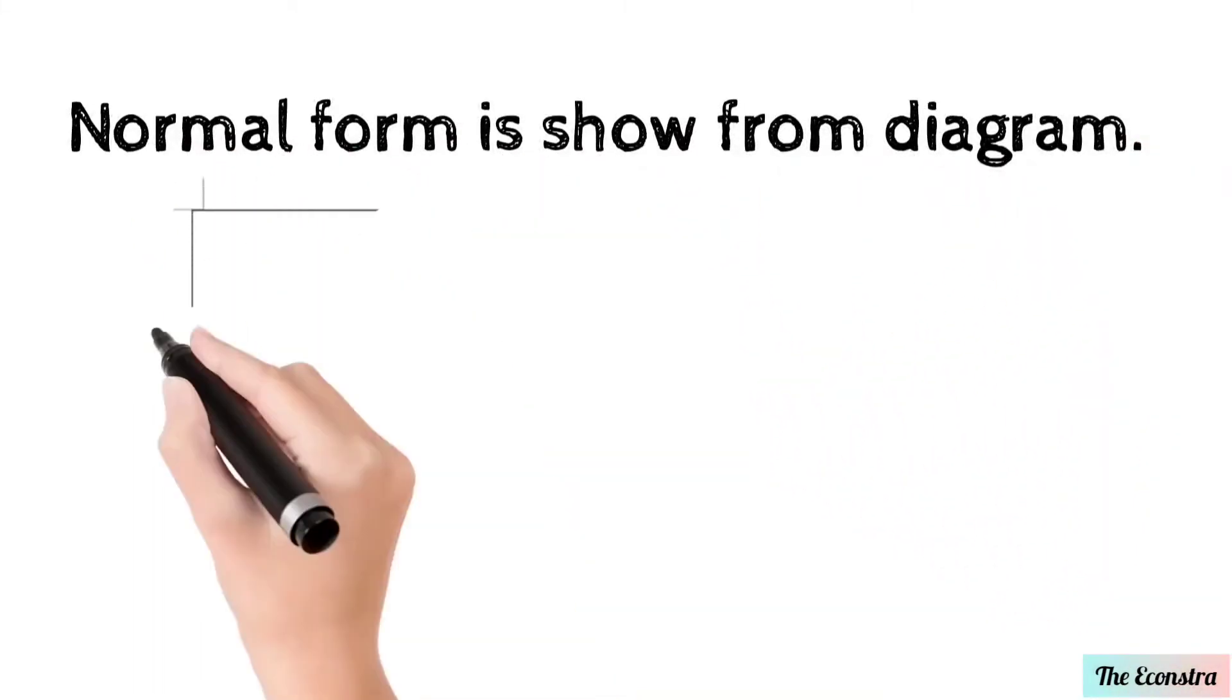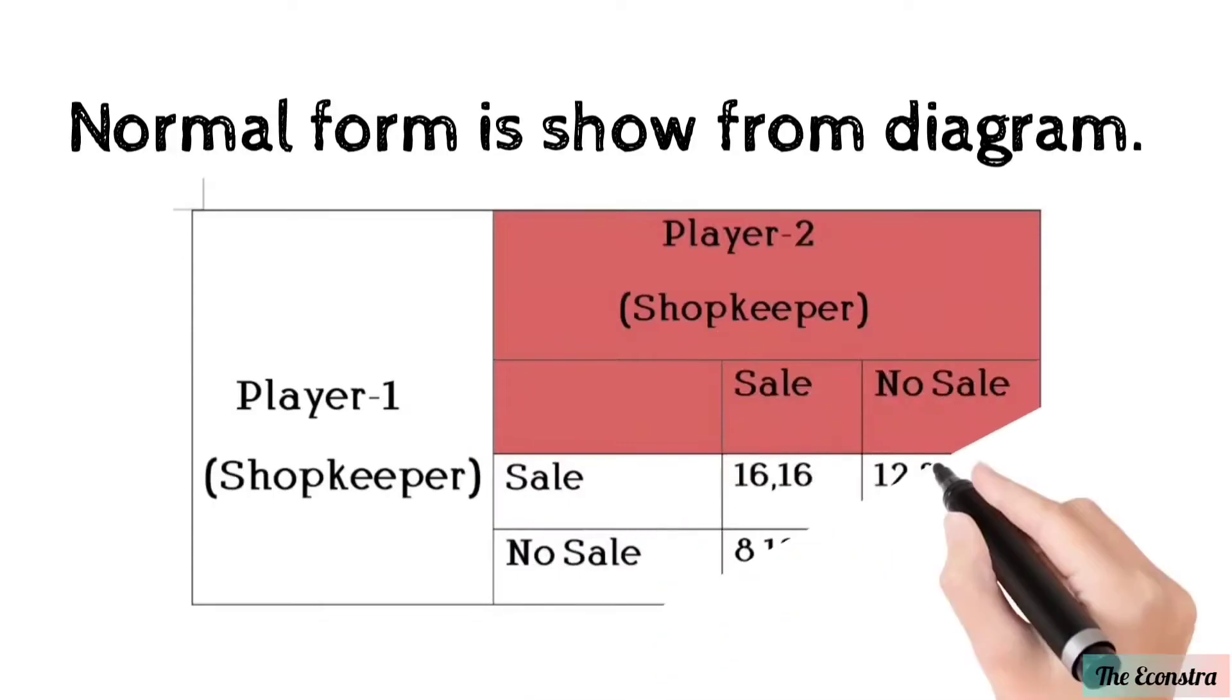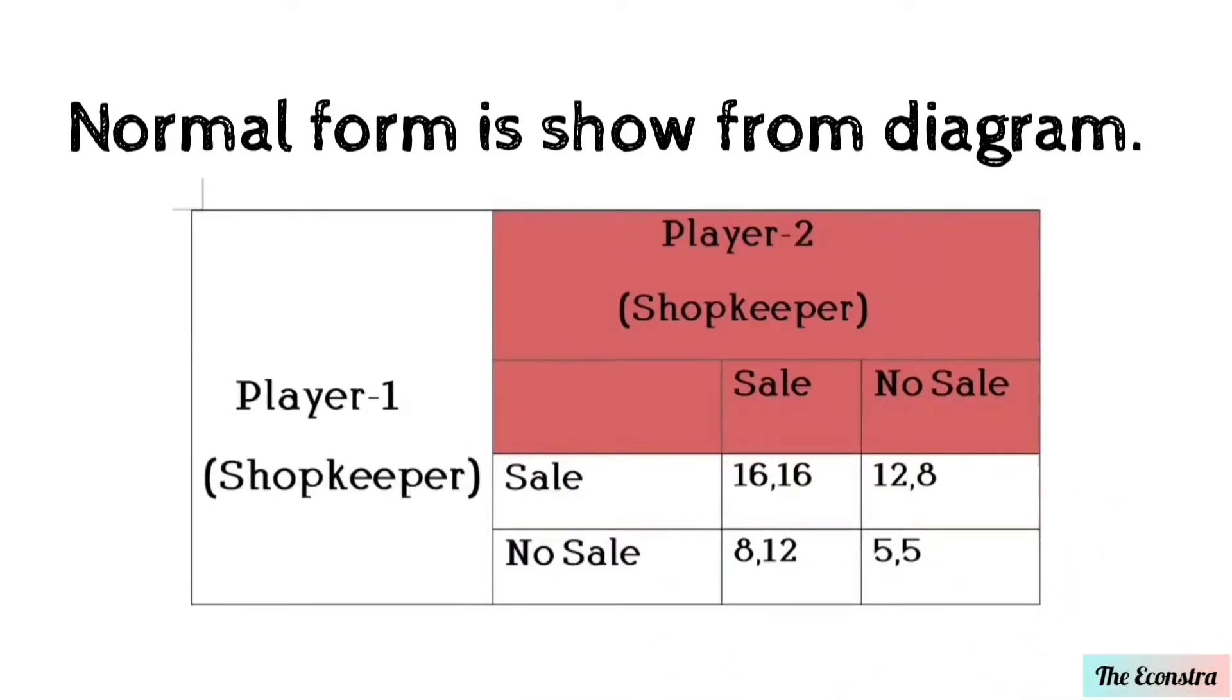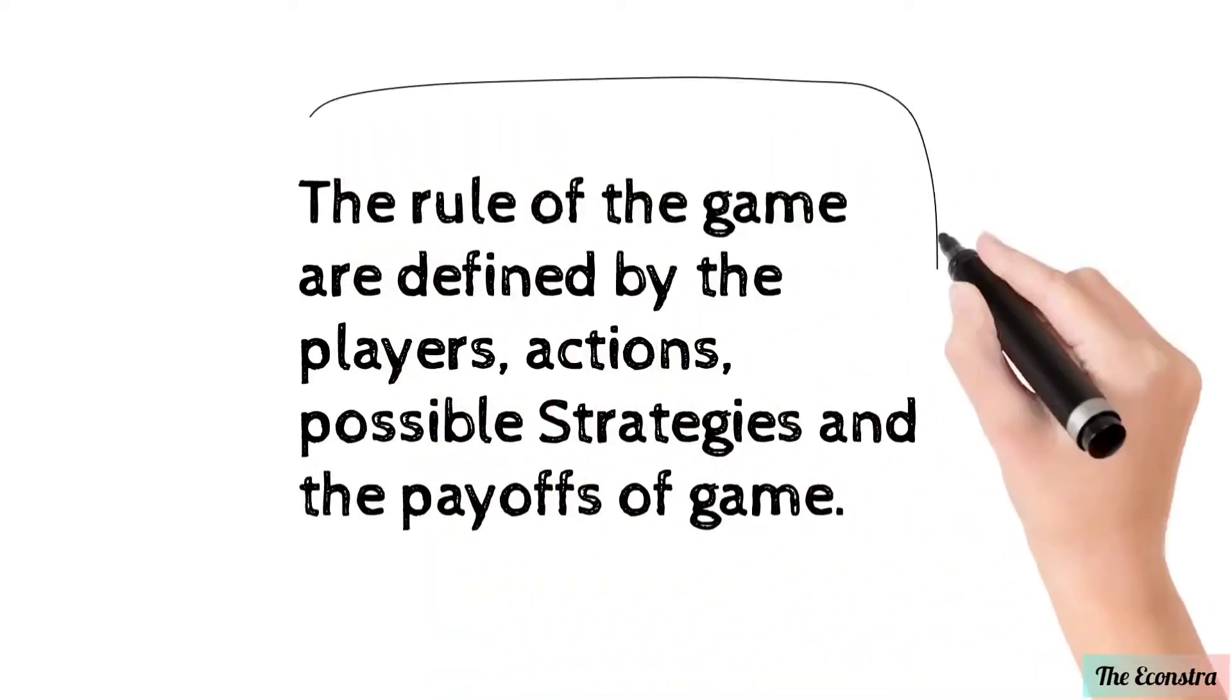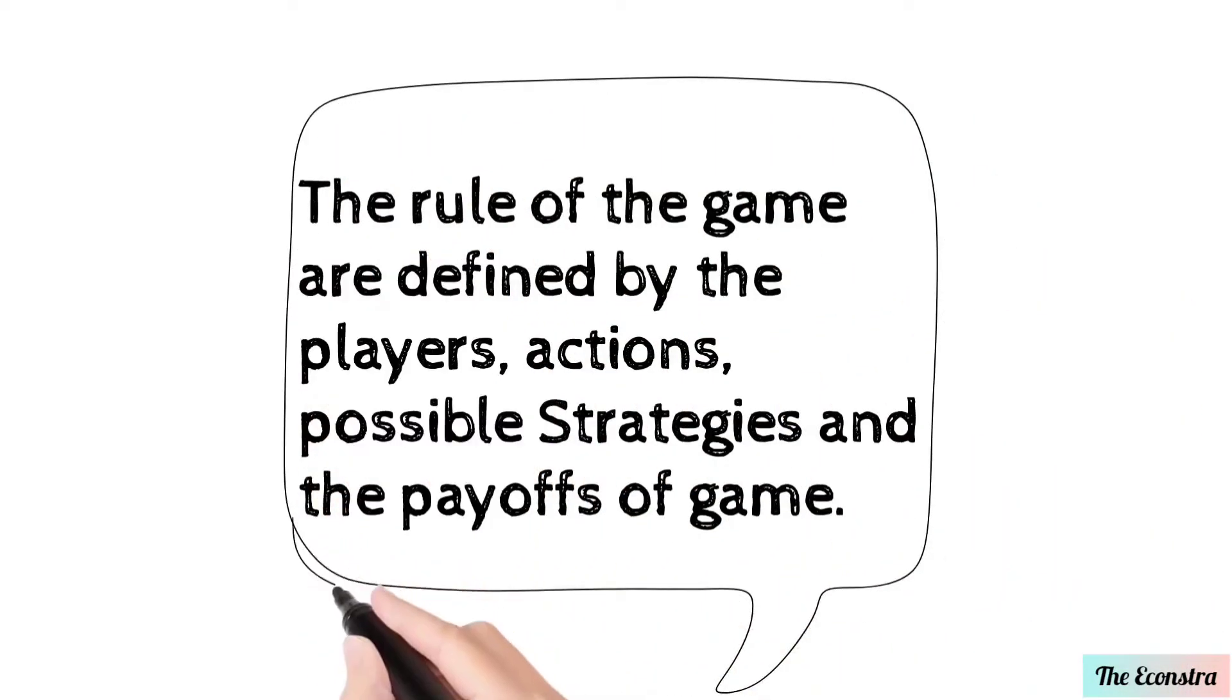Normal form is shown in a diagram. Here the diagram shows player 1 and player 2. The rules of the game are defined by the player's actions, possible strategies, and the payoffs of the game.